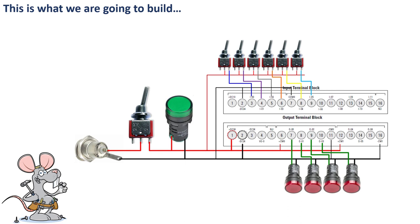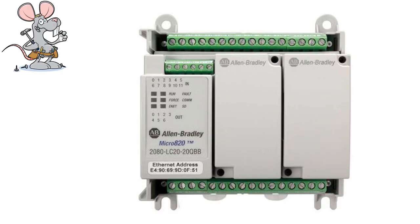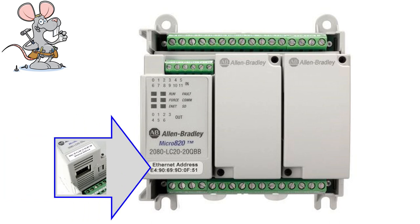Let's take a look. This is what we're going to build — or basically discuss building. This is a preview of it. First of all, you need a controller. My controller of choice is the LC2020QBB, and it has Ethernet. It also has RS-232, even though it doesn't have a conventional connector. I've put a little side view in there so you can see the Ethernet MAC ID, and it has an Ethernet IP port, which is very important.